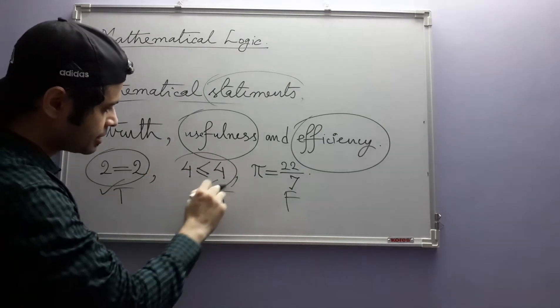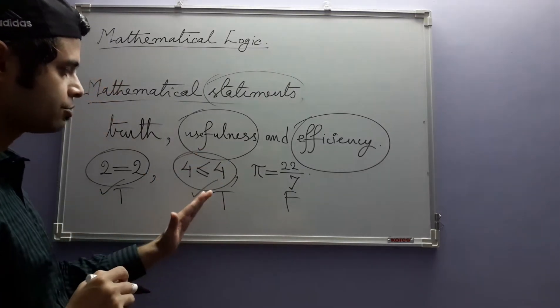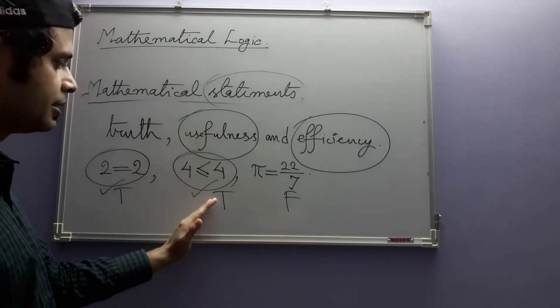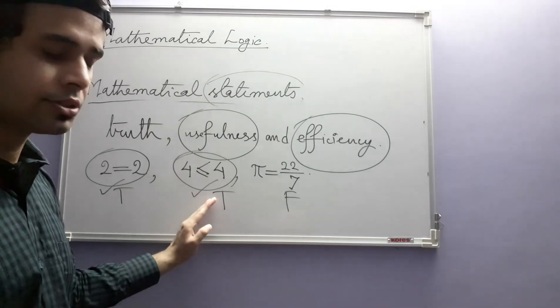4 is less than or equal to 4, this is also true. And it is also not very useful, but at the same time, it is not very efficient also.